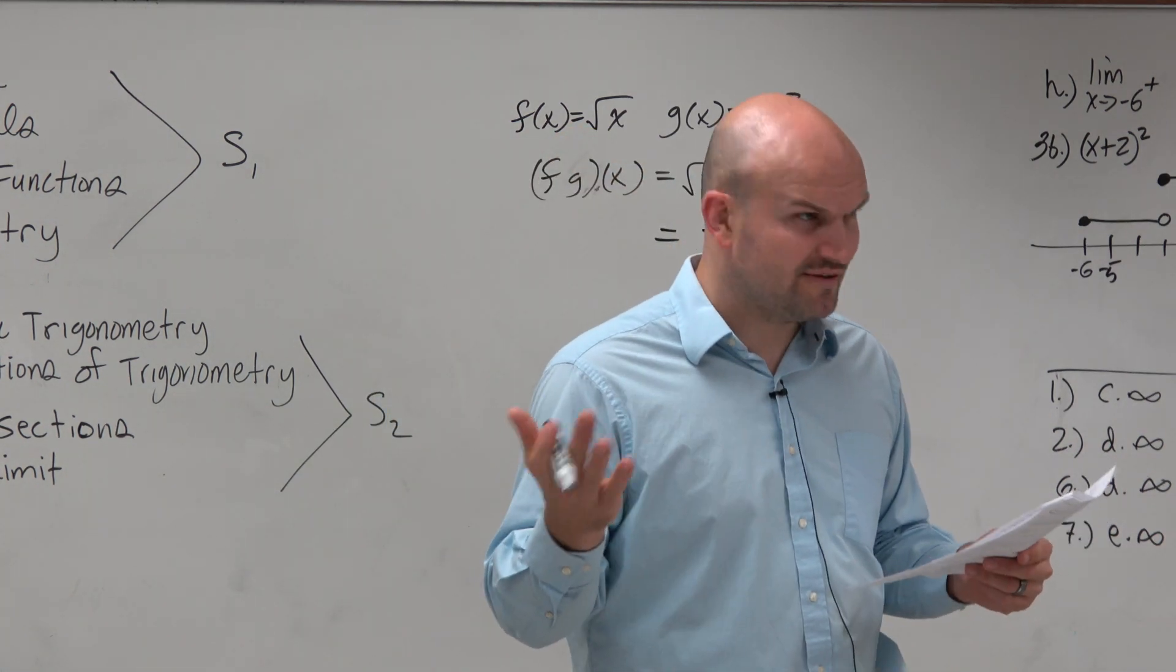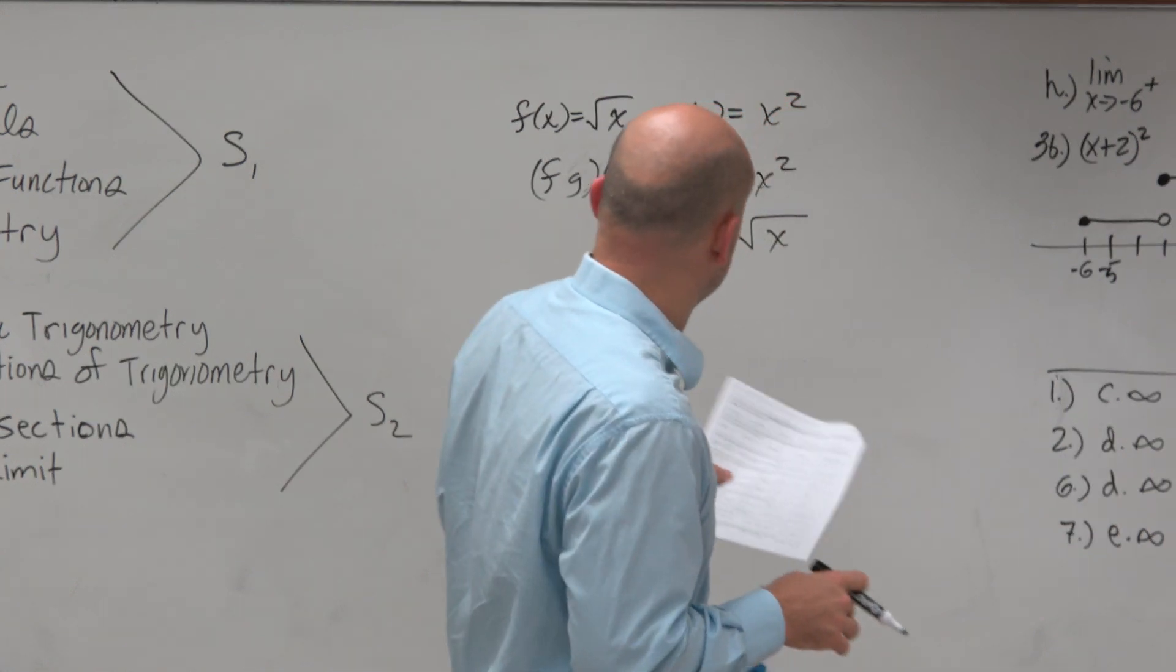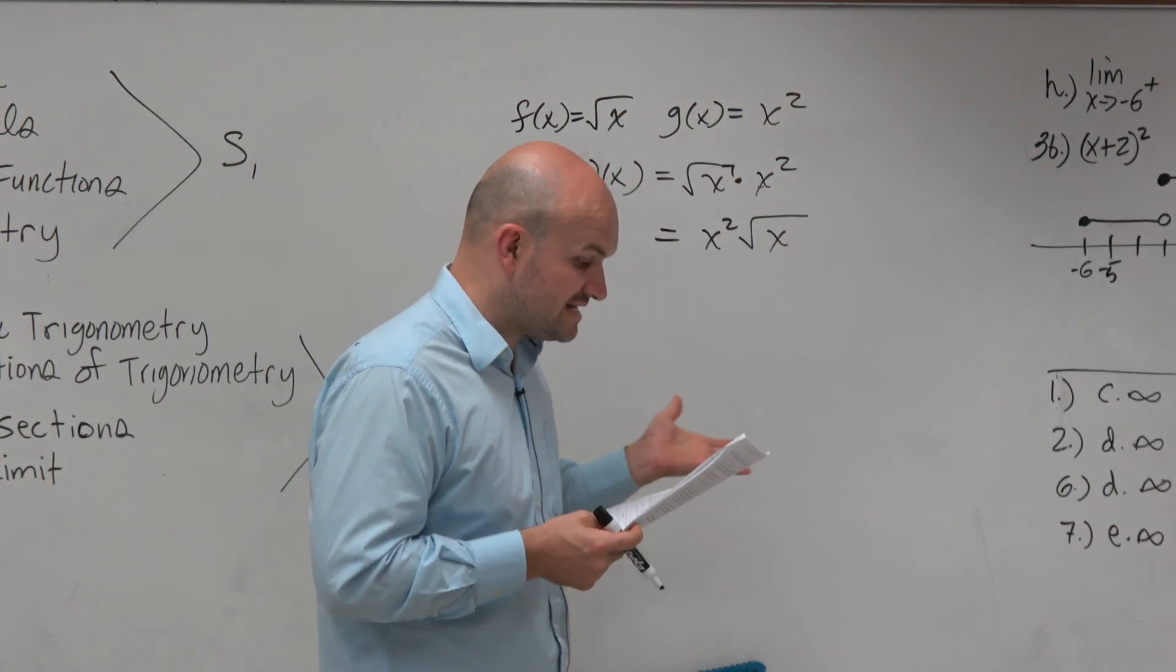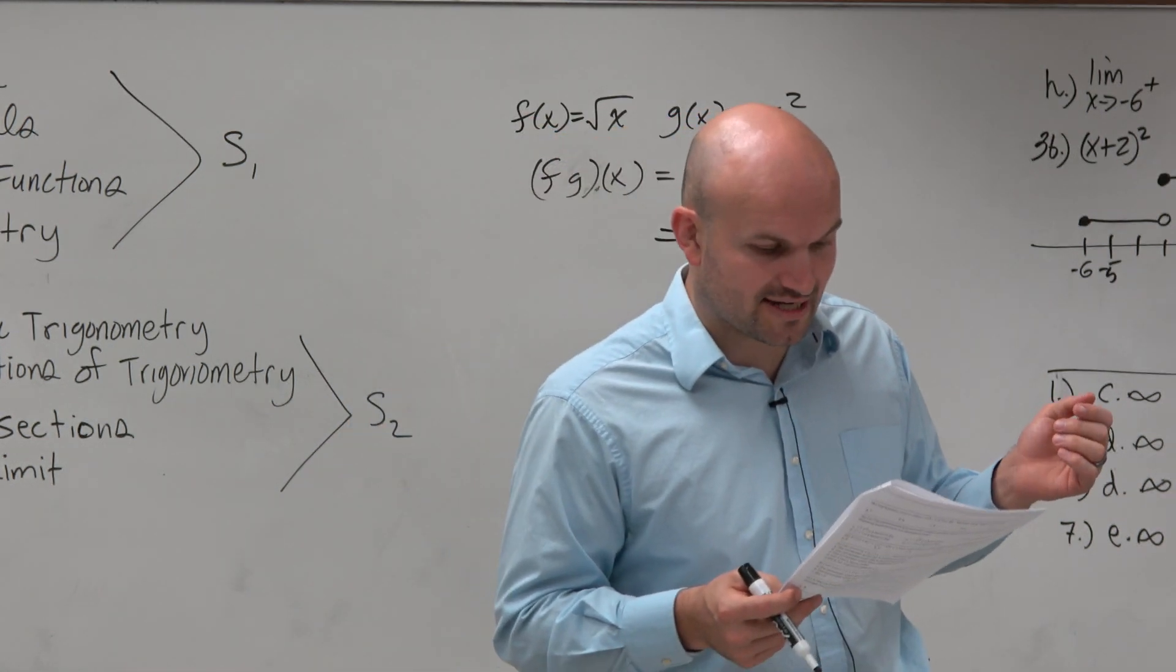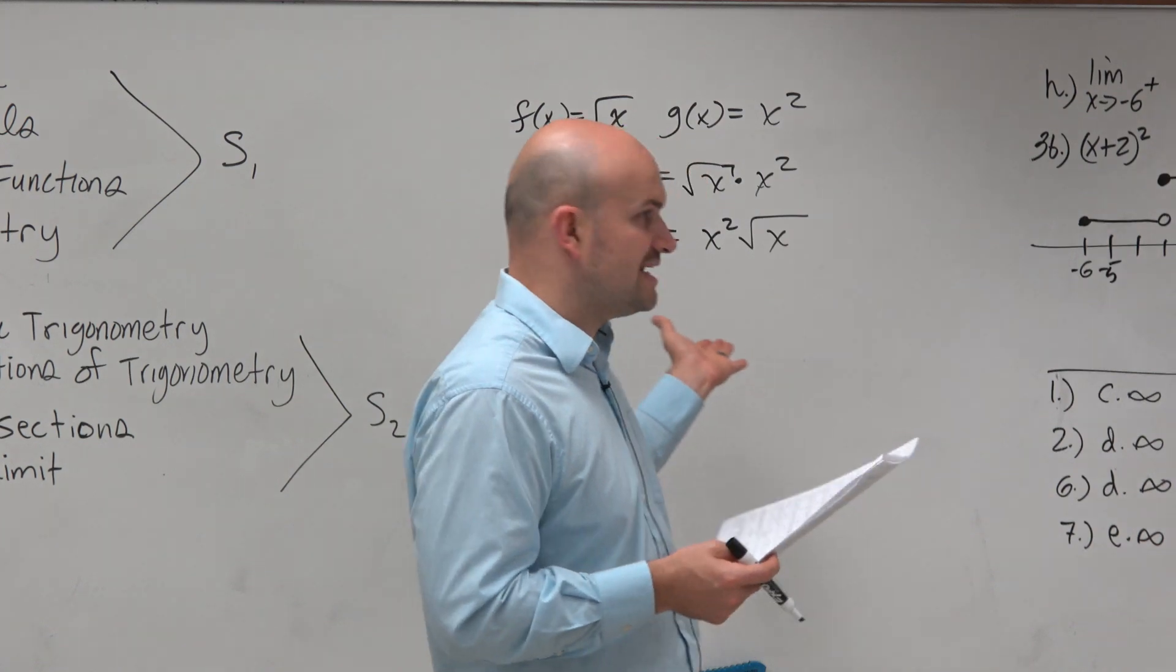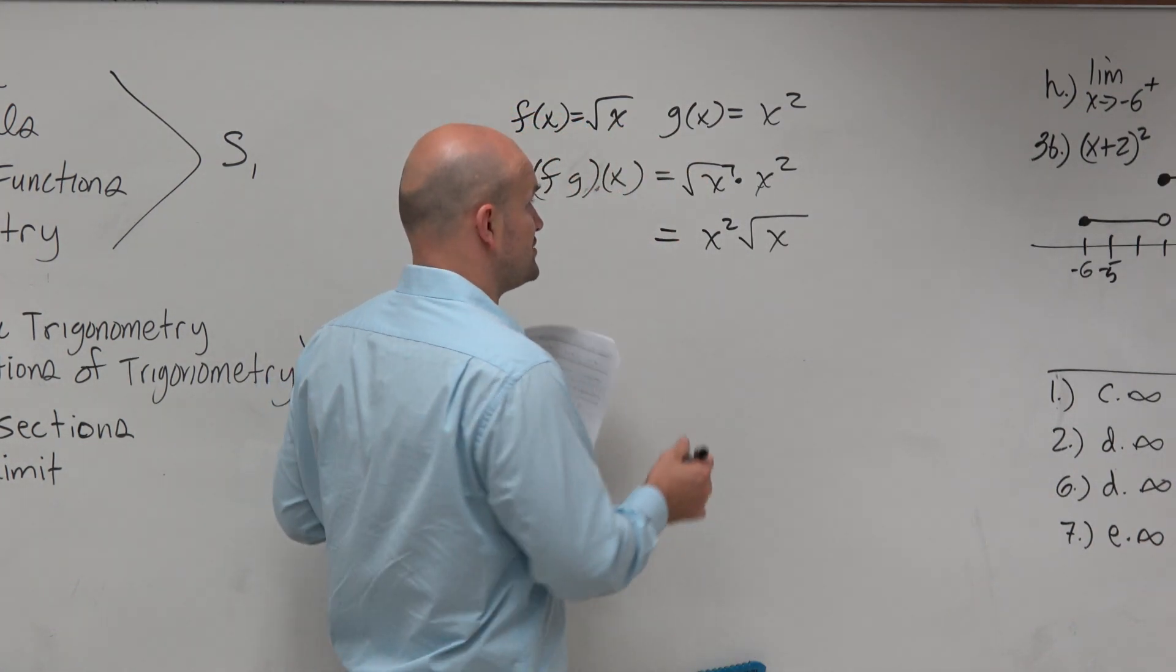B is the absolute value of x. That's kind of interesting. But I'm not really seeing how this is. So we'll come back to that. C has a fraction for a power, x to the 5 halves. And then D is just x. So this fraction one is kind of interesting, because that reminds me of algebra 2.